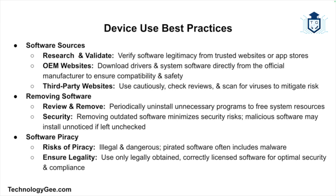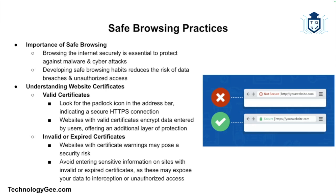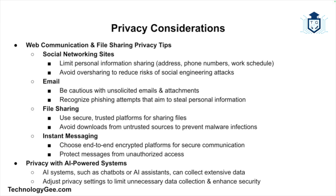Let's move on to safe browsing practices. Since the internet is a major vector for malware and attacks, securing your browsing habits is critical. When browsing websites, it's important to verify the security of a site through its certificate. Websites with valid certificates display a padlock icon in the address bar, showing that they use secure HTTPS connections, ensuring that any data you enter is encrypted. If a website shows a warning about an invalid or expired certificate, proceed with caution — this could indicate a potential security risk, and you should avoid entering sensitive information on these sites.